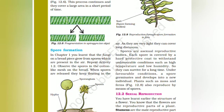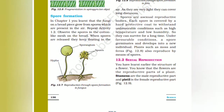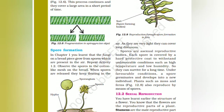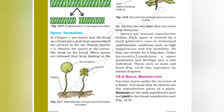Next is spore formation. Fungi on a bread piece grow from spores which are present in the air. If bread is left outside, spores land on it and a cotton-like mesh grows on the bread. When spores are released they float in the air, as they are very light, and can cover long distances. Spores are reproductive bodies; each spore is covered by a hard protective coat to withstand unfavorable conditions such as high temperature and low humidity. Under favorable conditions, spores germinate and develop into new individuals. Plants such as moss and ferns also reproduce by means of spores.